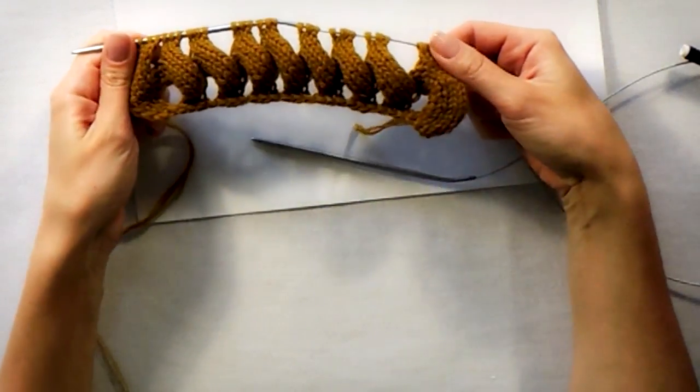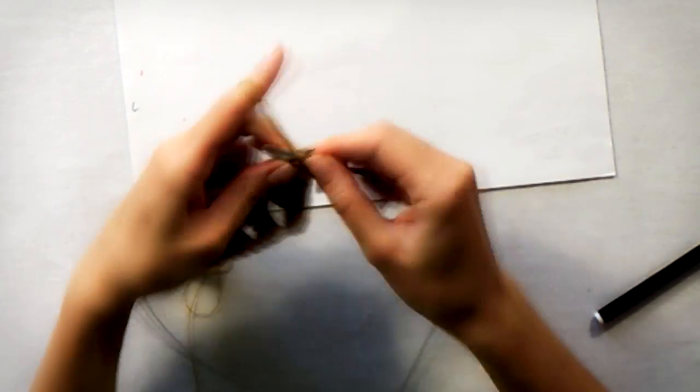This is how it will look like. Before starting the second side of the width make 2 rows of stockinette.